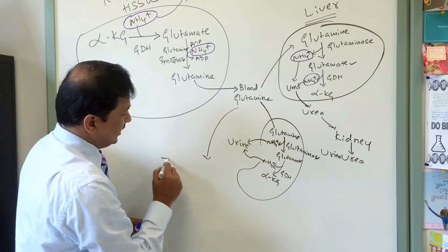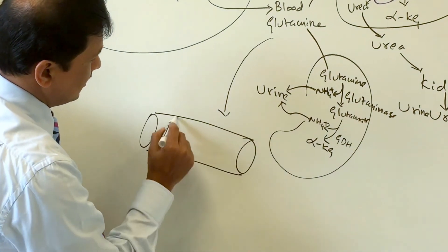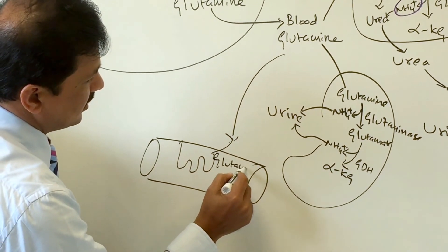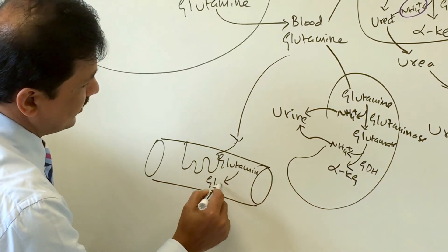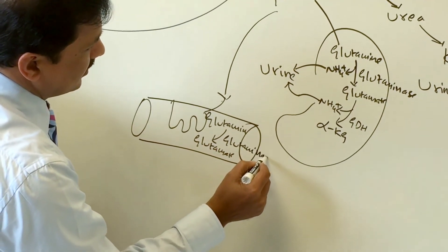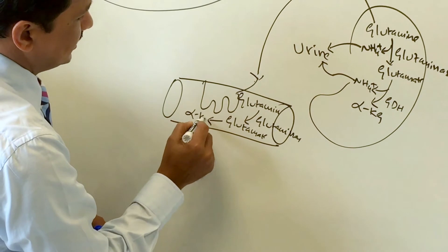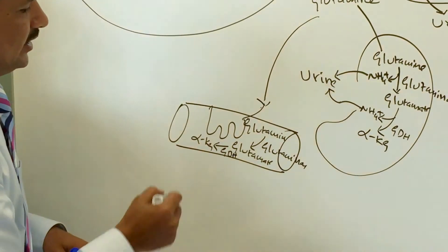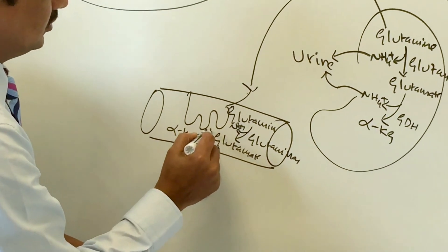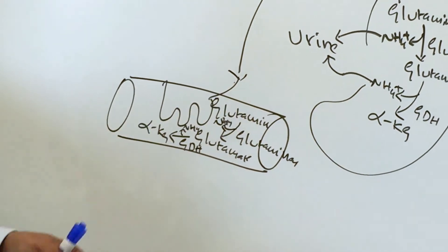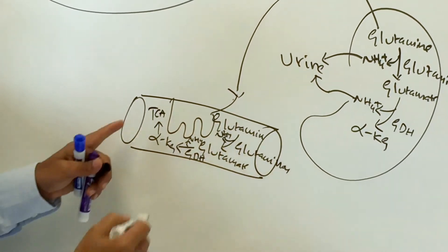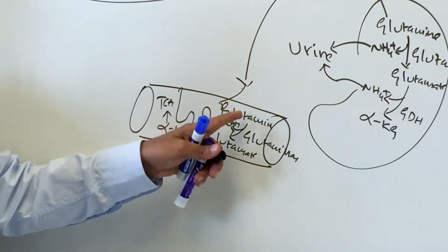Some blood glutamine is also taken up by the intestine. The intestine breaks glutamine into glutamate by glutaminase enzyme, and glutamate is further converted to alpha-ketoglutarate by glutamate dehydrogenase, releasing ammonium ions (NH4+) that enter portal circulation and are carried to the liver. The alpha-ketoglutarate enters the TCA cycle to make energy — that is the purpose of glutamine uptake by the intestine.